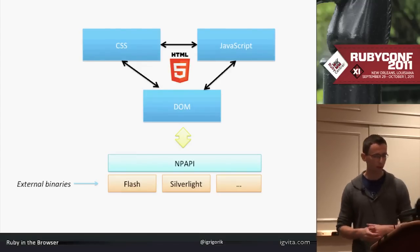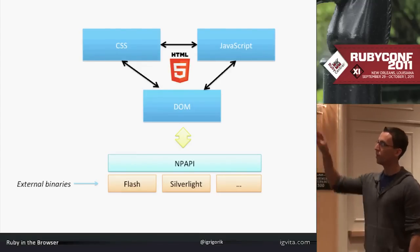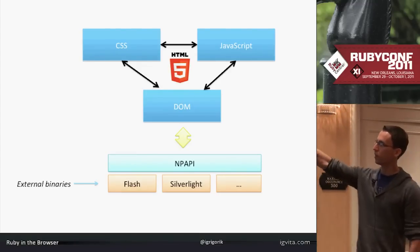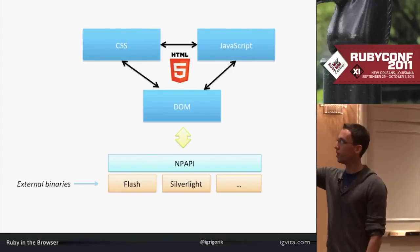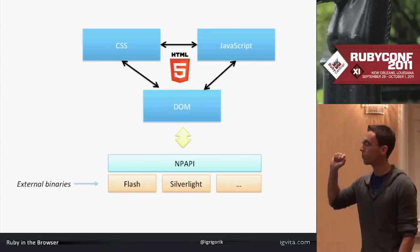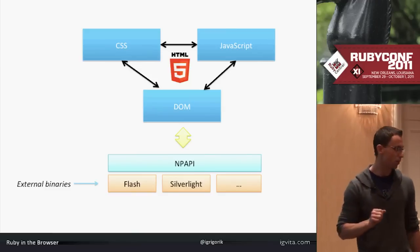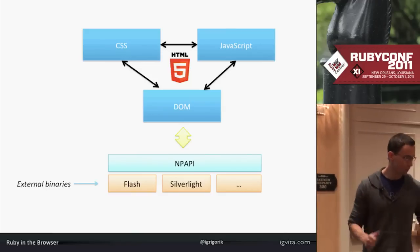How does it work? The rendering engine looks at all the file types it's pulling in. If it recognizes a registered file type or MIME type — let's say a music MP3 file — it says, oh yeah, I have a plugin registered to interpret that, I'll just pass it off. This is how your QuickTime or Acrobat works. So just to visualize it: we have the DOM, we have the Netscape Plugin API, and then we have a bunch of external binaries — Flash, Silverlight, whatever. You can build your own.